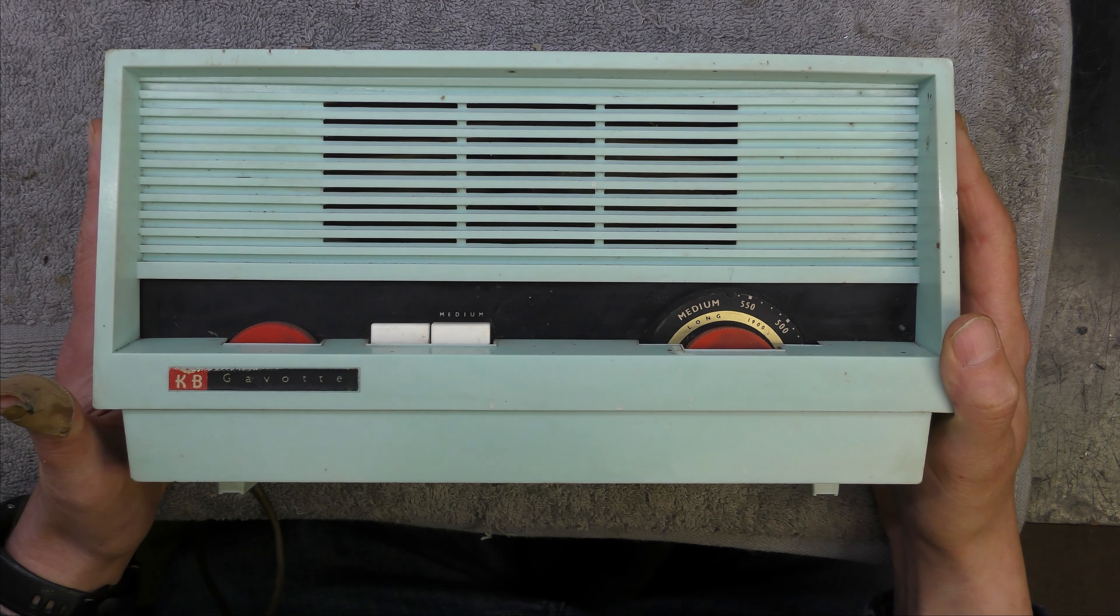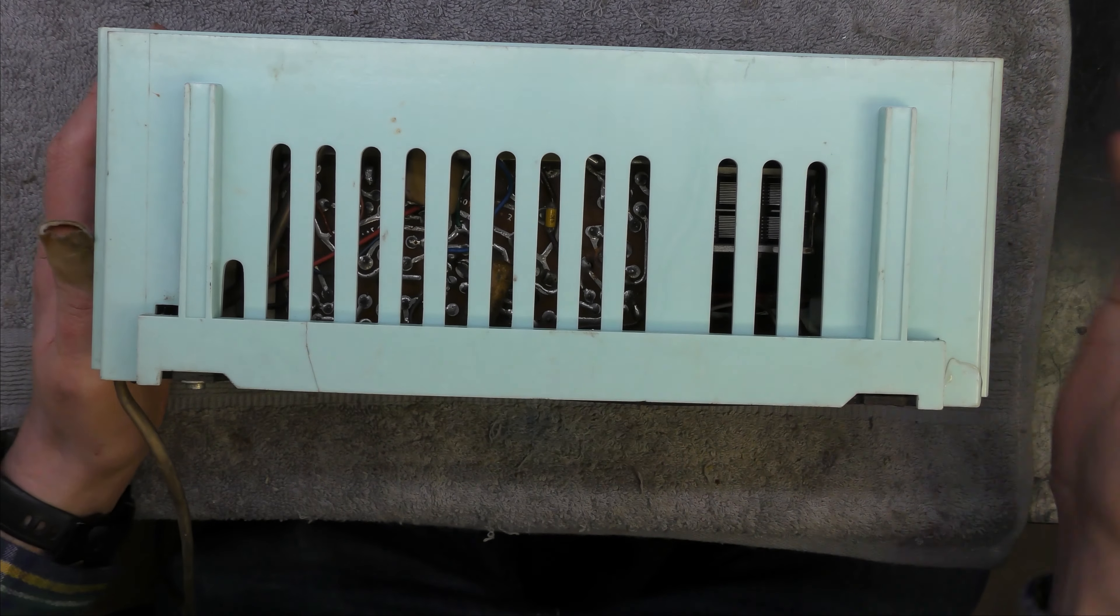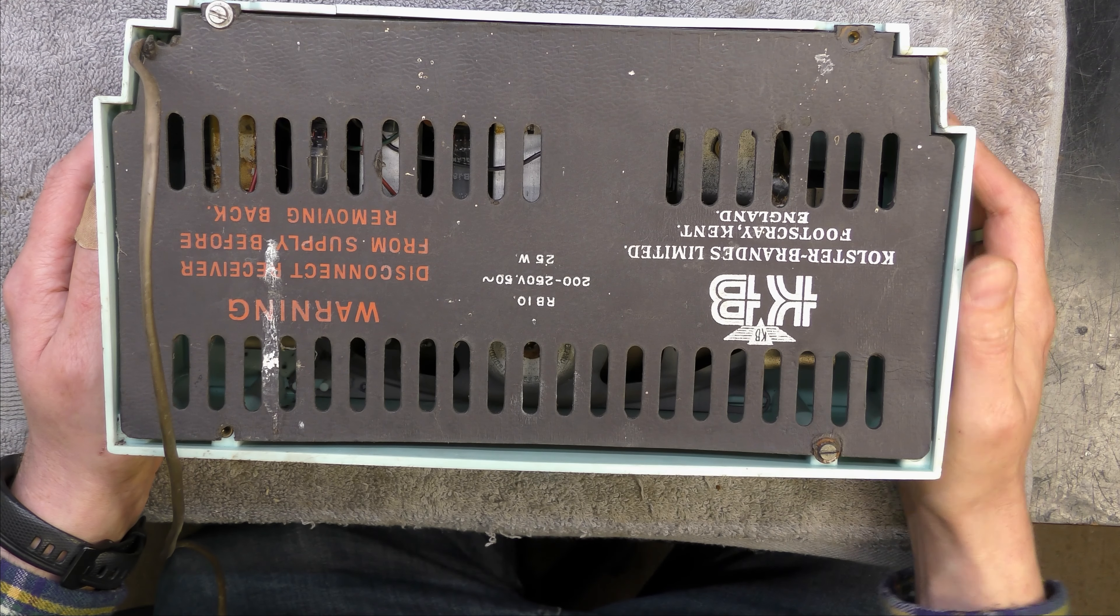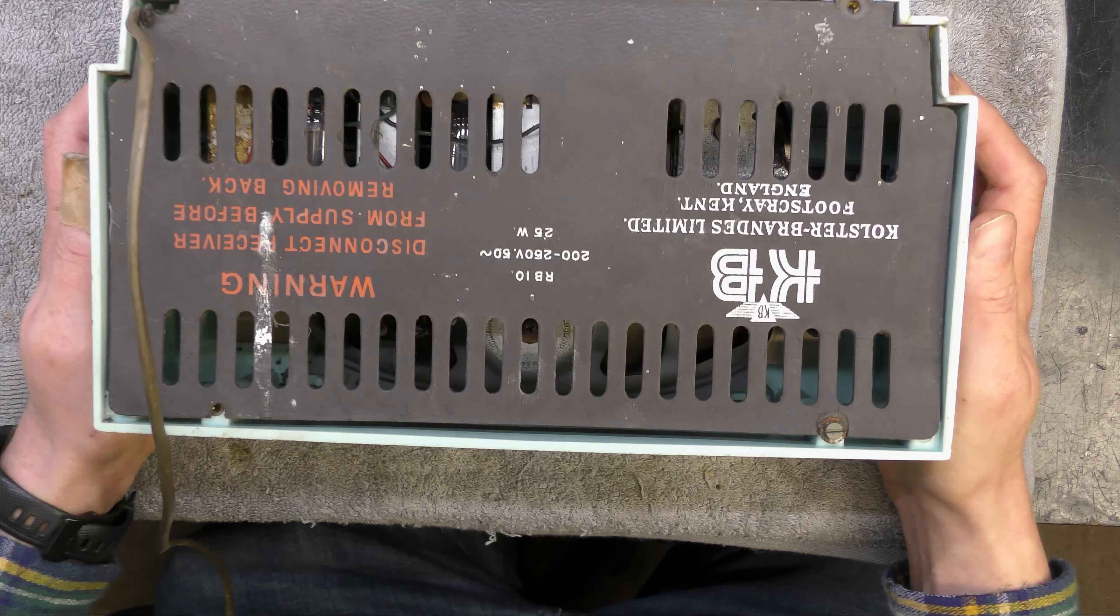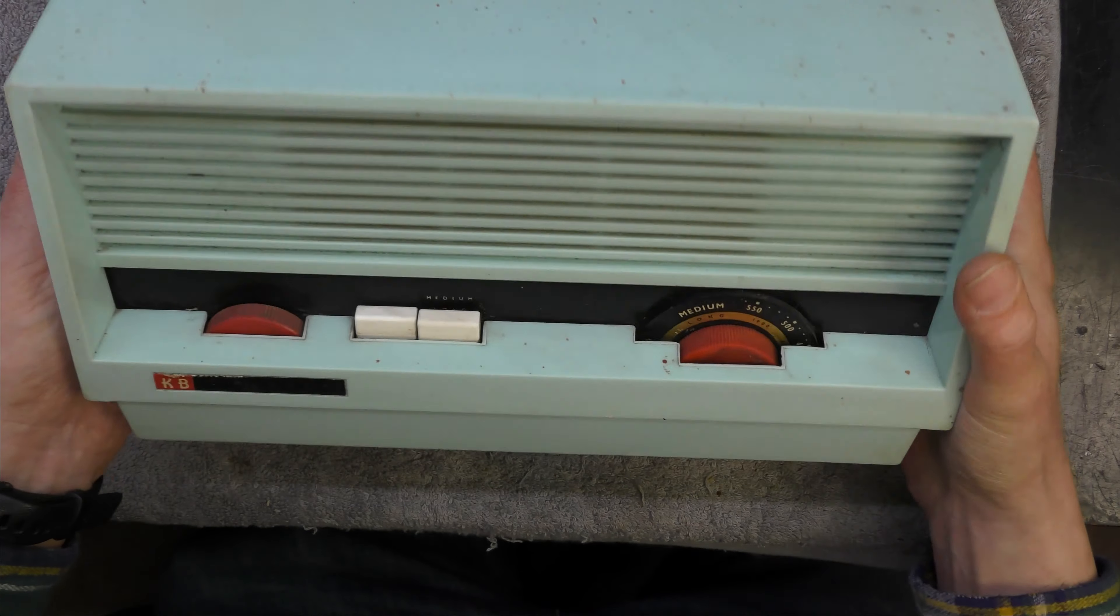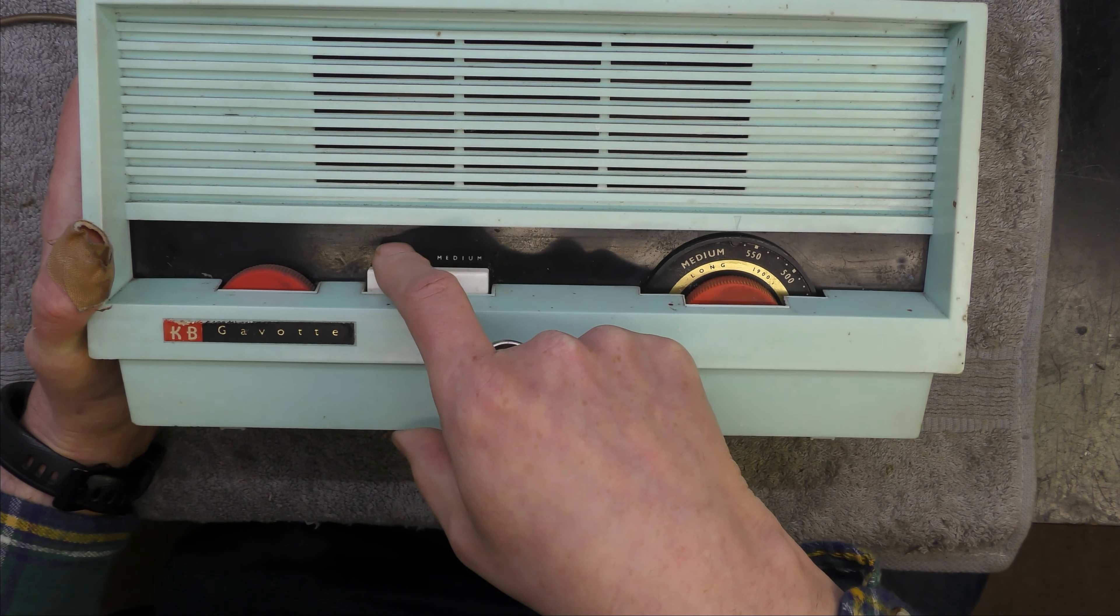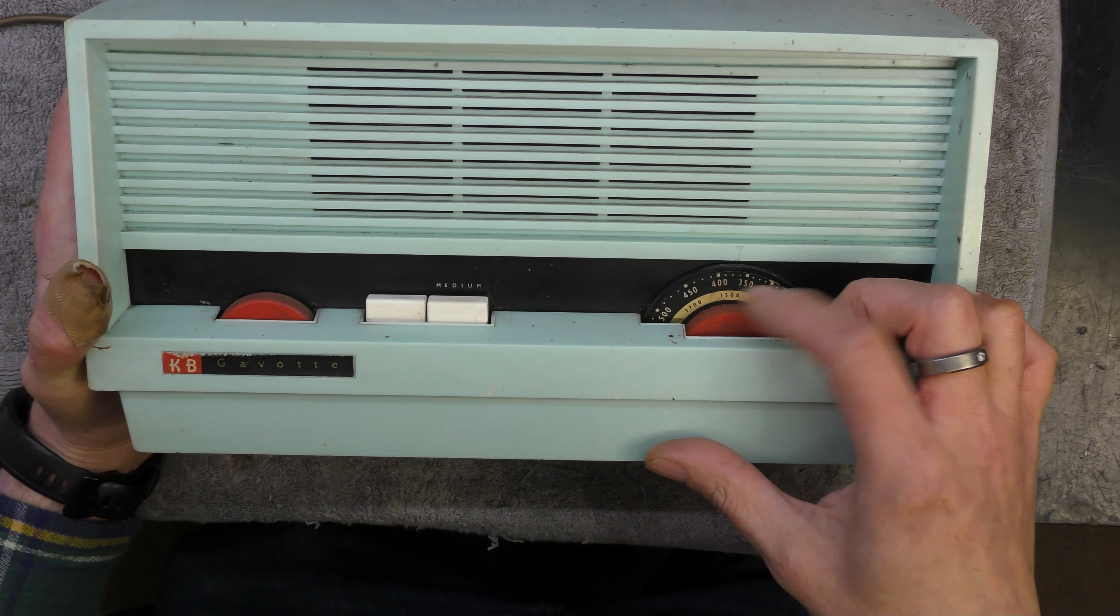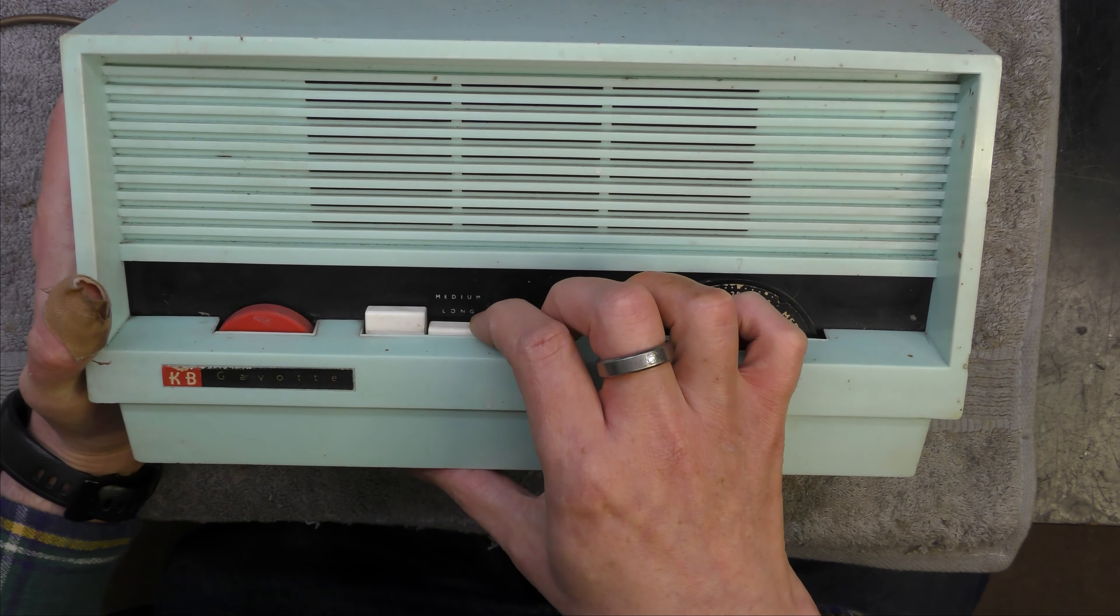It's a little tatty, there's a crack in the bottom of the case. The back cover looks like it's seen perhaps a bit of moisture. I think this set is from about 1960. I noticed the on-off markings are missing. Tuning scale marked in meters, volume control, medium and long wave.